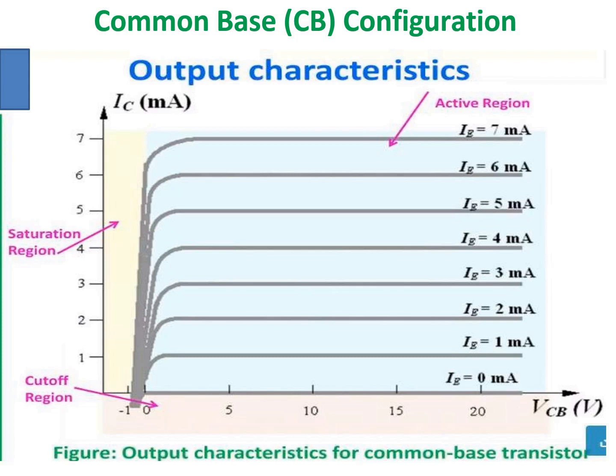If an excessive reverse bias voltage is applied to the collector-base junction, the device breaks down. This breakdown is shown as dashed lines in the diagram and is known as the punch-through effect or reach-through effect. In your exam, it is sufficient to mark the saturation region, cutoff region, and active region.